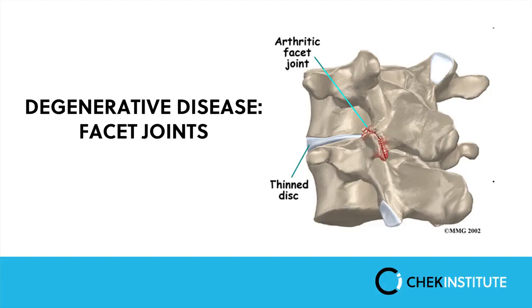Next is degenerative disease of the facet joints. At the back of each vertebral body you have facet joints. If there are excessive forces going through these joints — which often happens with people who have an excessive lumbar lordosis — you'll get wear and tear on those joints, which we call osteoarthritis or facet joint disease. You'll get localized pain in the area, and there may also be hypertrophy of those joints, which can often be indicated by an x-ray.